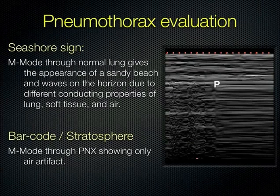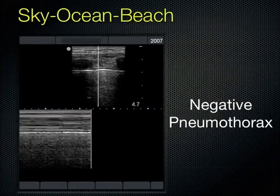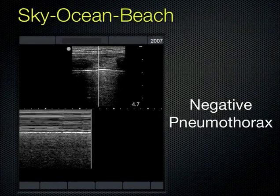An example of M-mode through the pleural interface: you can appreciate definite sky, ocean with the pleural line as the horizon, and a beach more inferiorly — that's due to the motion of the lung.